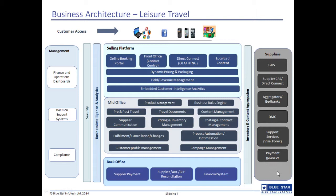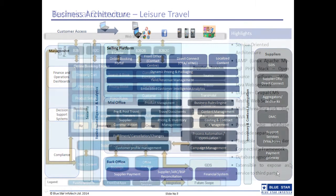The bottom-most layer is the back office that takes care of financial systems, supplier payments and reconciliation. On the right is the supplier layer that encompasses GDS, DMC, various online suppliers and services such as Visa, Forex, insurance and payment gateways. The security and BI and analytics layer as well as the inventory management layer are also included.